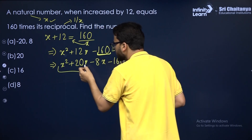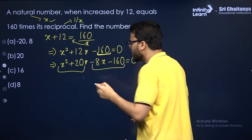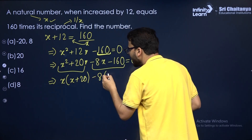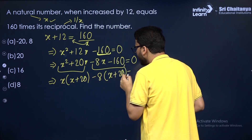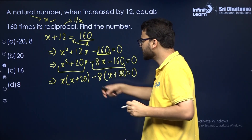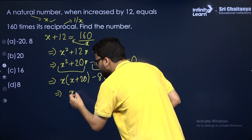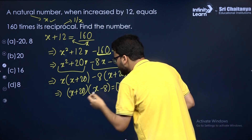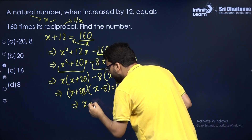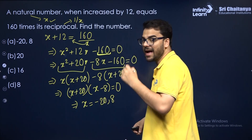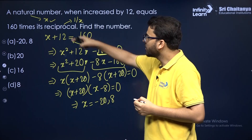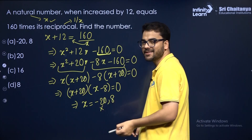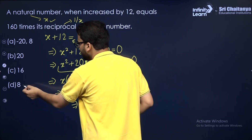Group the terms: first group X(X + 20), second group −8(X + 20) = 0. Taking (X + 20) as common: (X + 20)(X − 8) = 0. So X = −20 or X = 8. But since it's a natural number, −20 is not valid, so X = 8 is the answer.